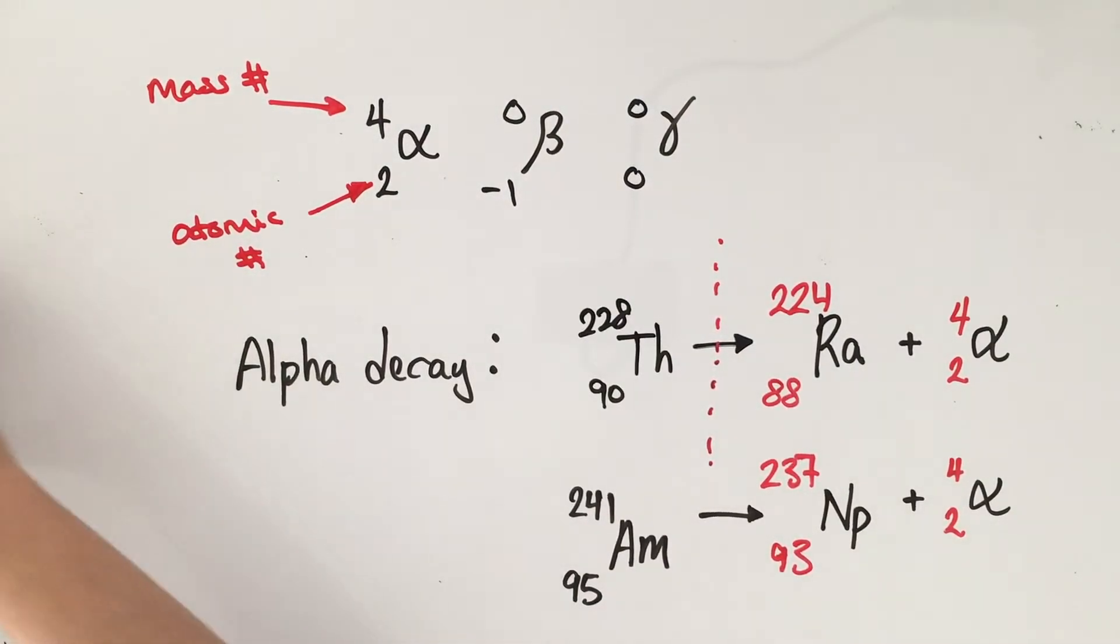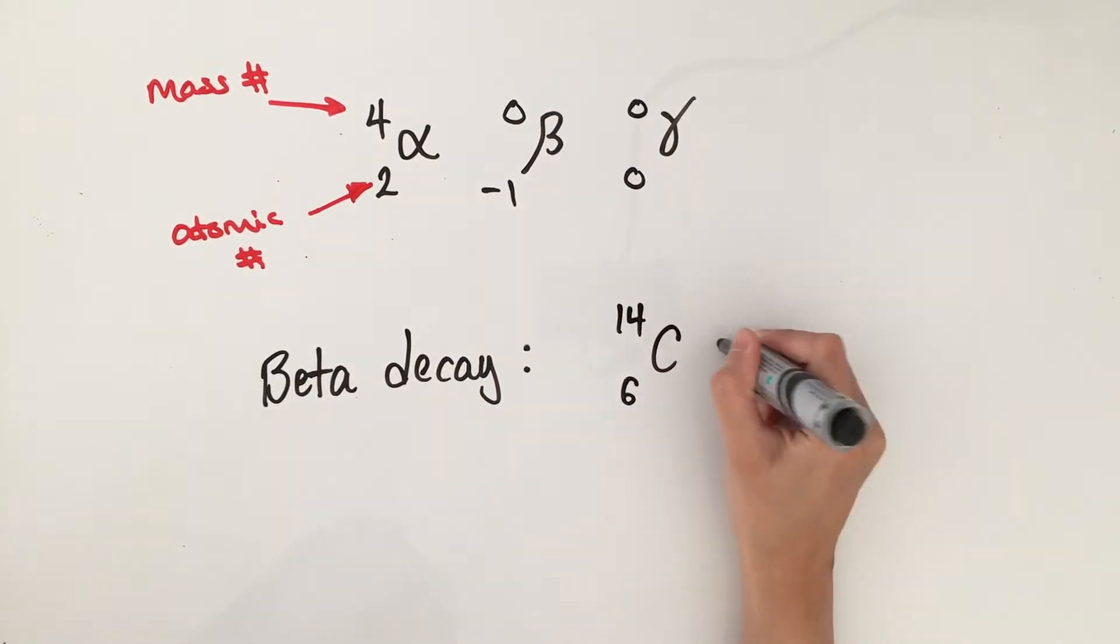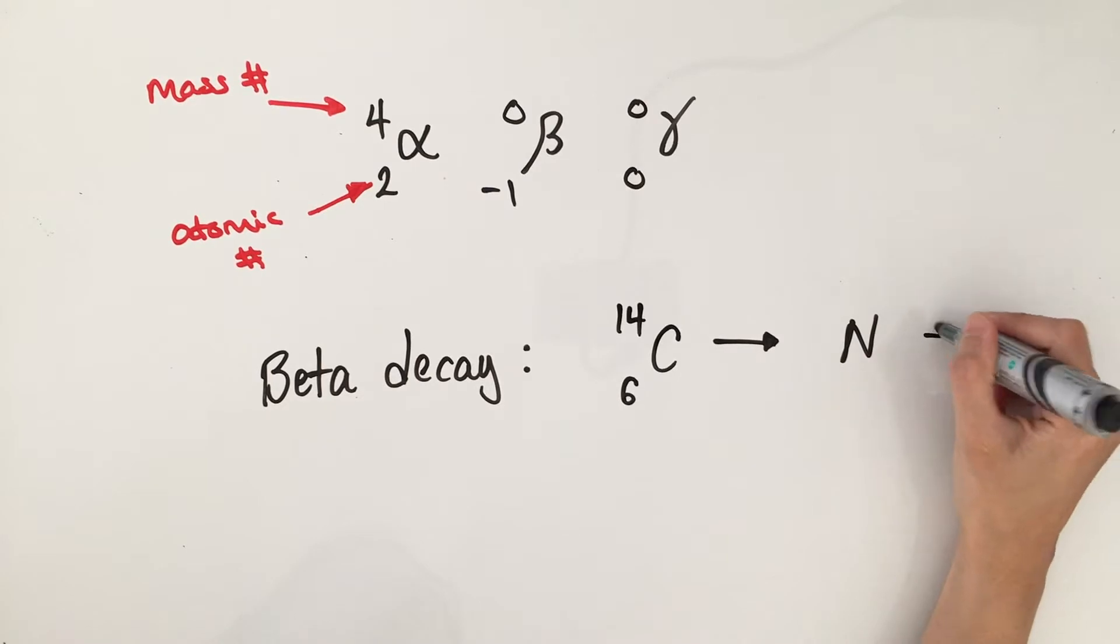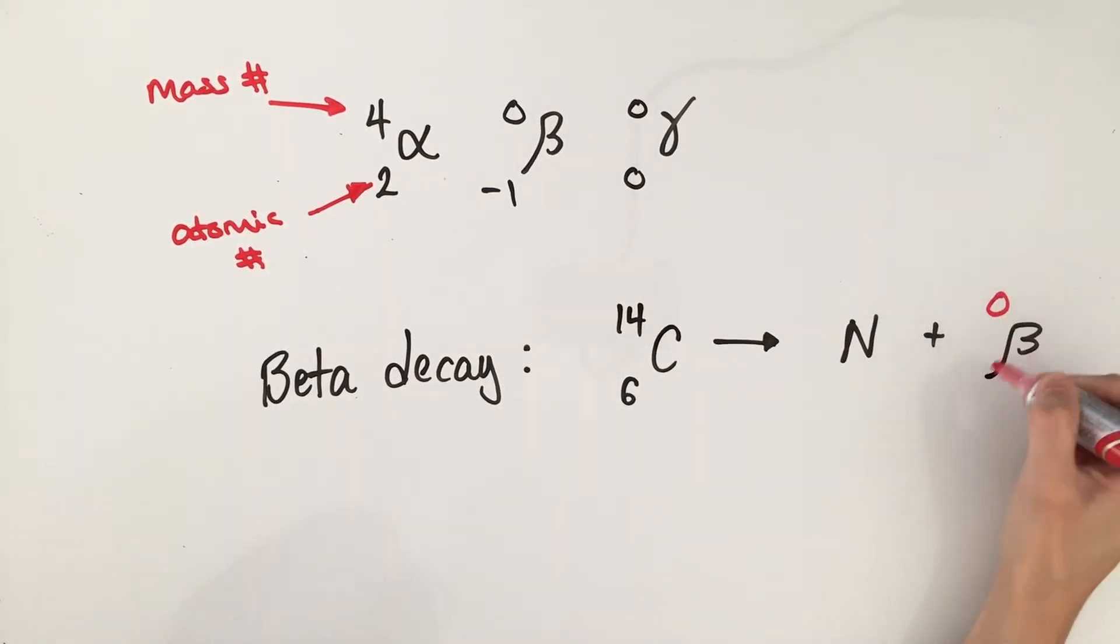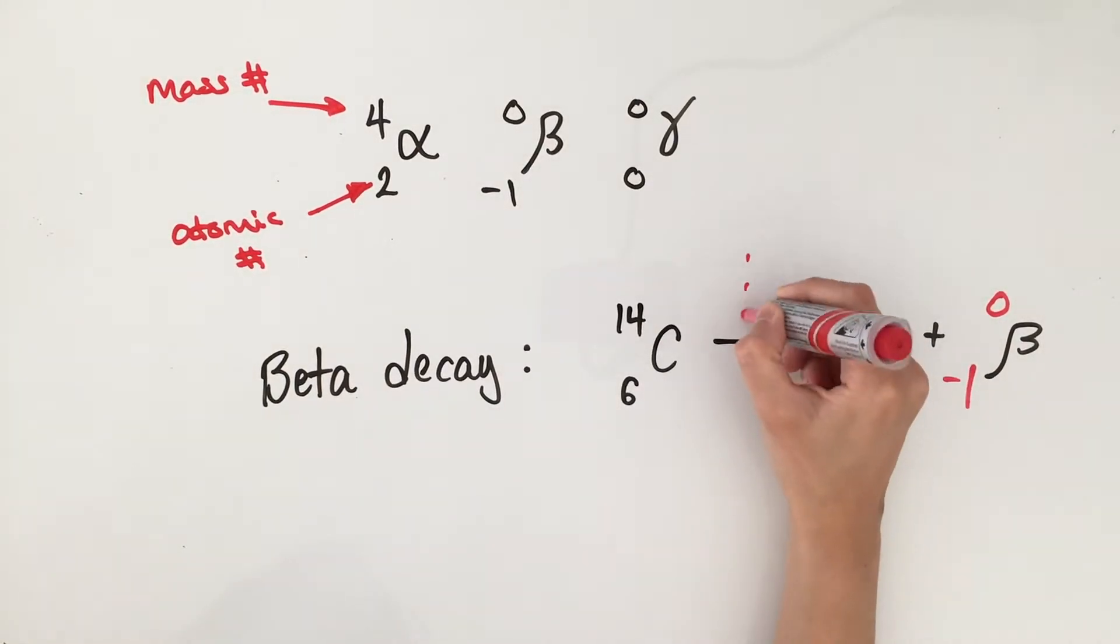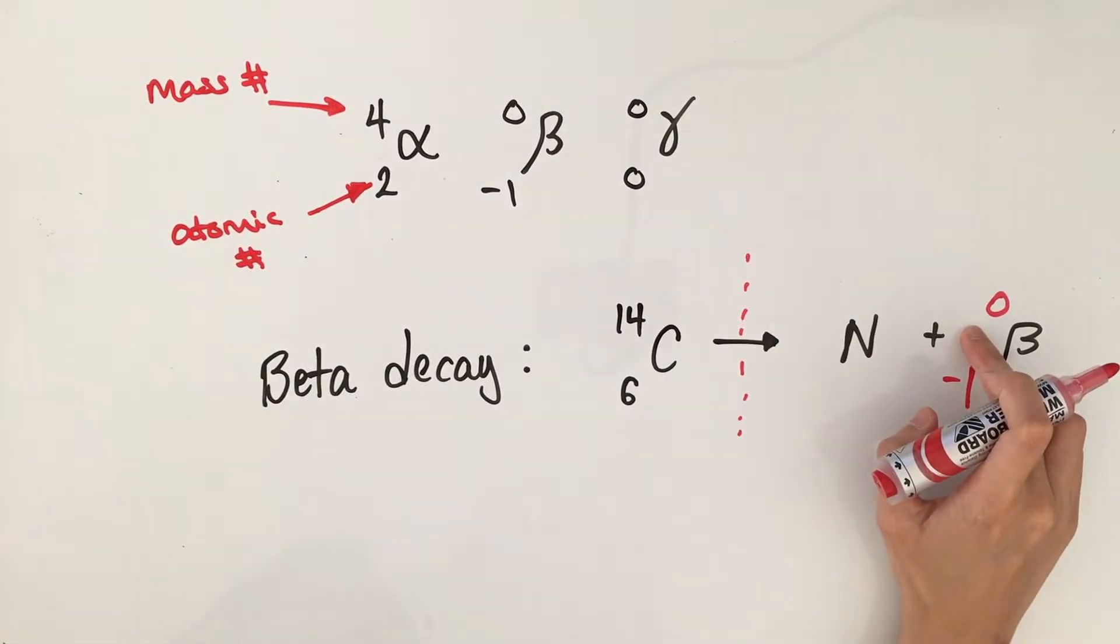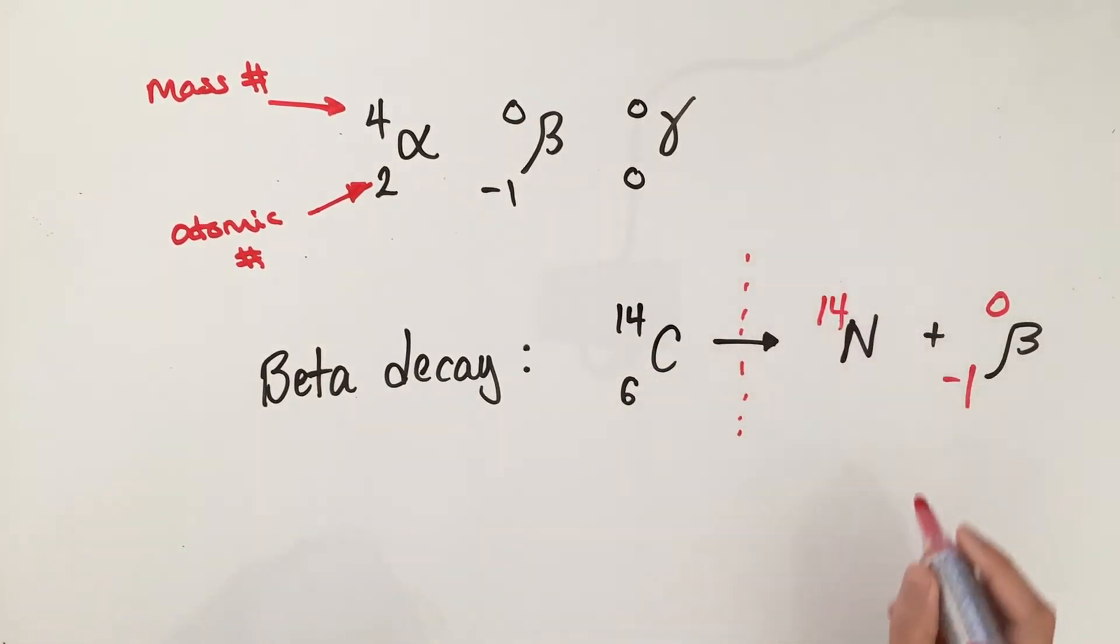Now let's look at beta decay. So we have carbon-14 decaying into nitrogen and a beta particle. Again, we write down the mass number and atomic number for beta first, and then work out what else we need to add up to what's on the left-hand side. Since the mass number of beta particle is 0, we know that the mass number of nitrogen must be 14.